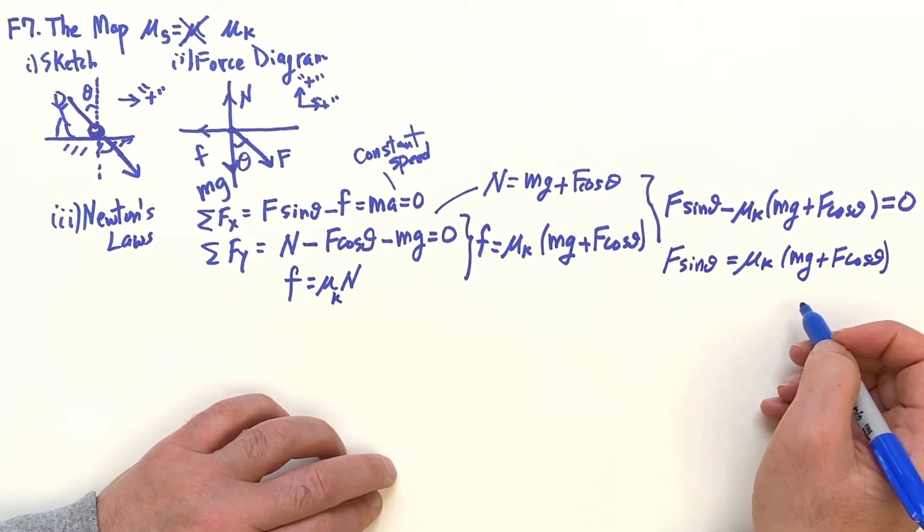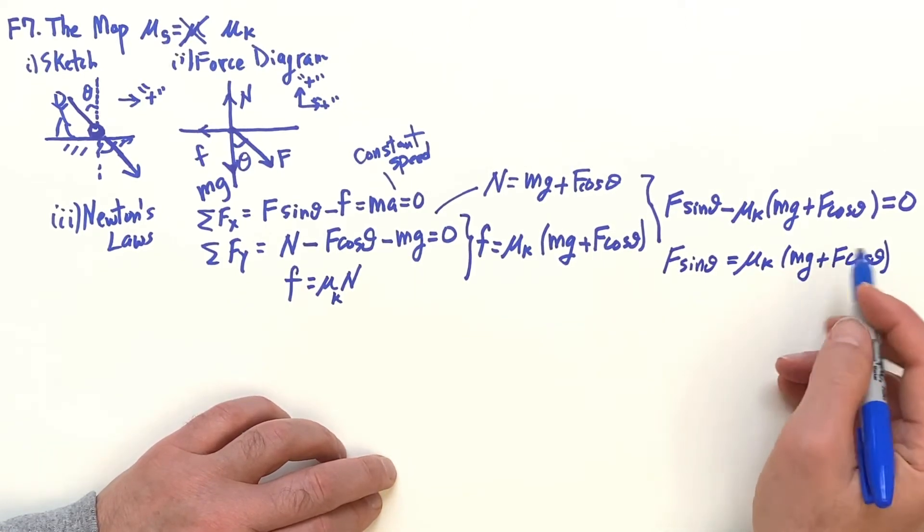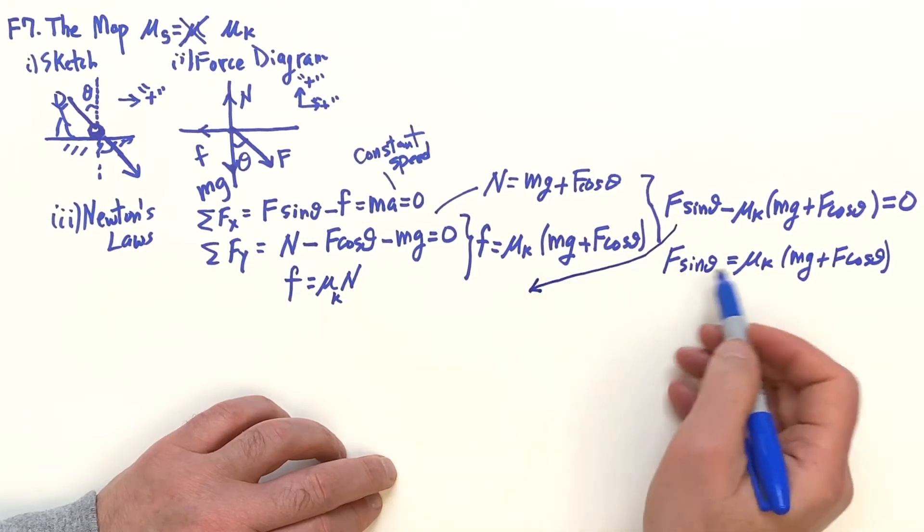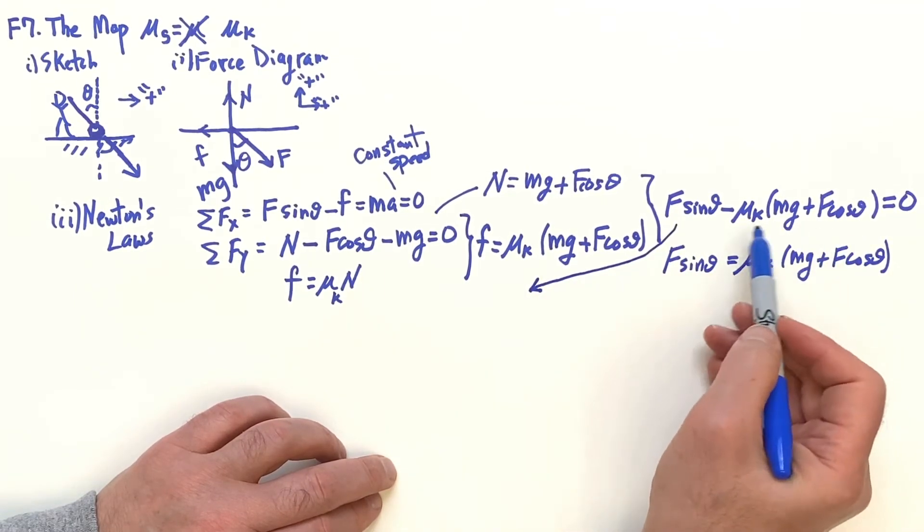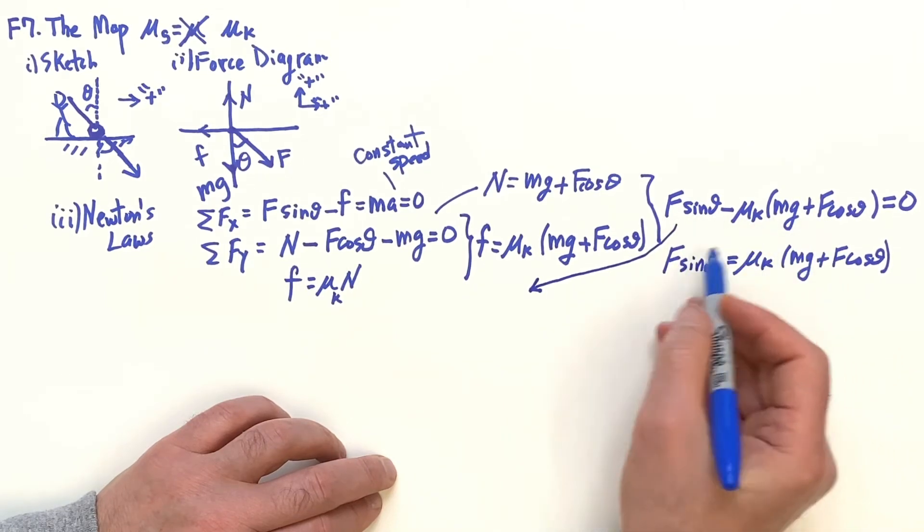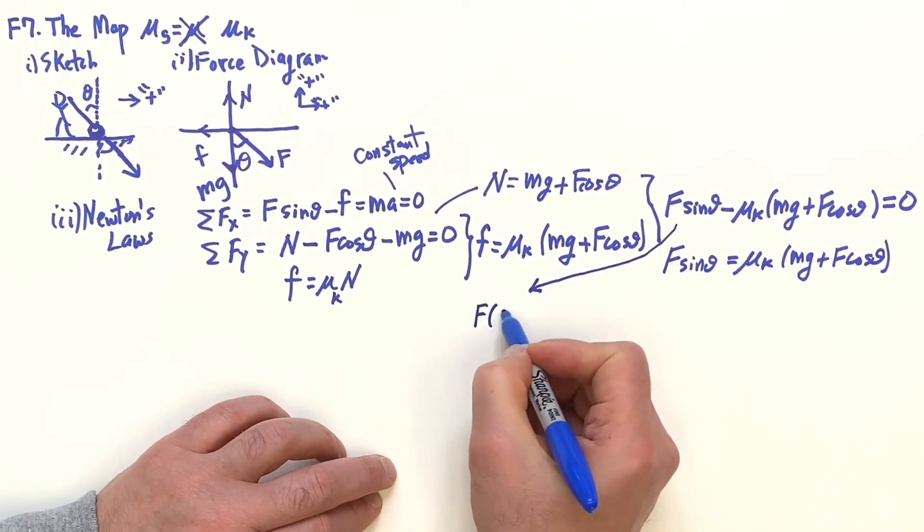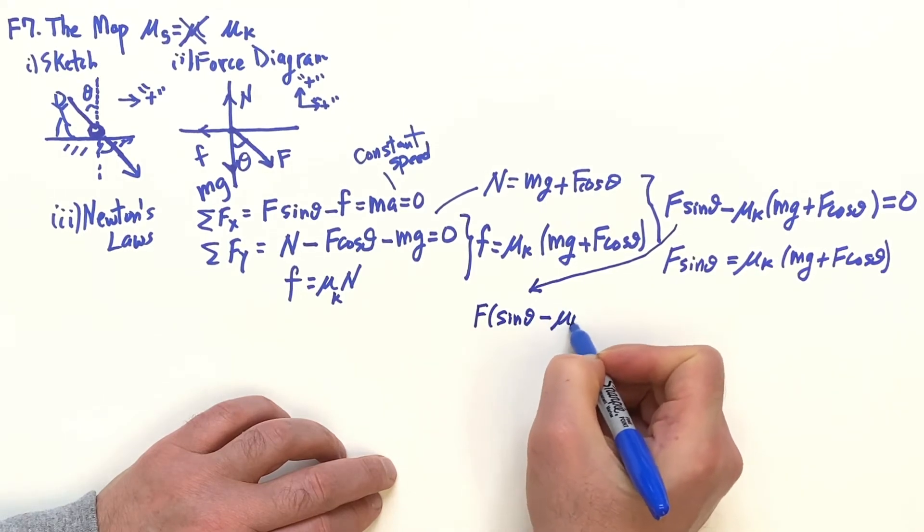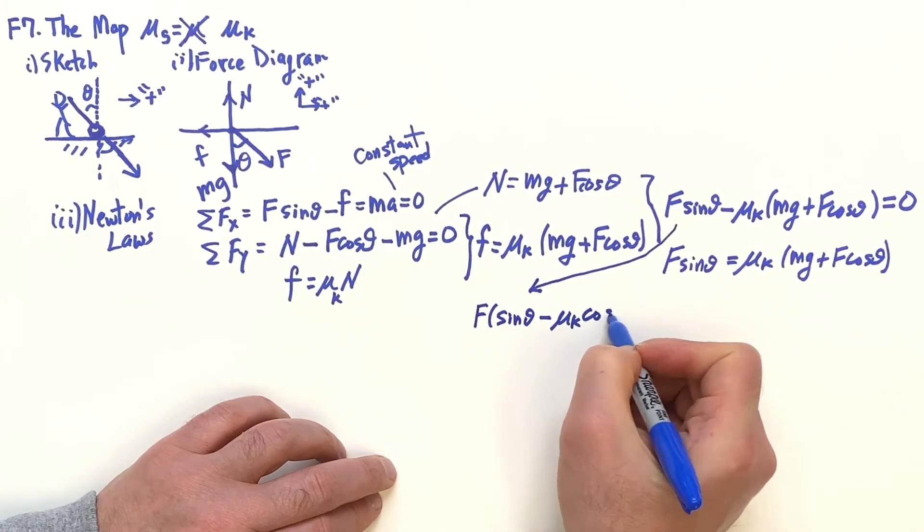When you do math you do change your mind. It looks like here since I want that F and it's in two places, maybe just go ahead and factor that out. This is sin θ minus μ_k cos θ.